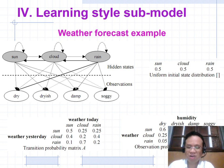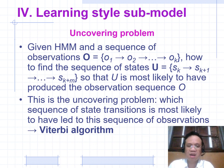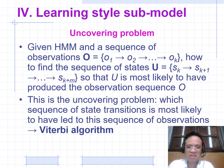An HMM example includes a uniform initial state distribution p, a transition probability matrix A, an observation probability matrix B, and an uncovering problem. Given an HMM and a sequence of observations O = {o1, o2, ..., ok}, the task is to find a sequence of states {sk, sk+1, ..., sk+m} such that this sequence is the most likely to have revealed the observation sequence O — this is the uncovering problem.